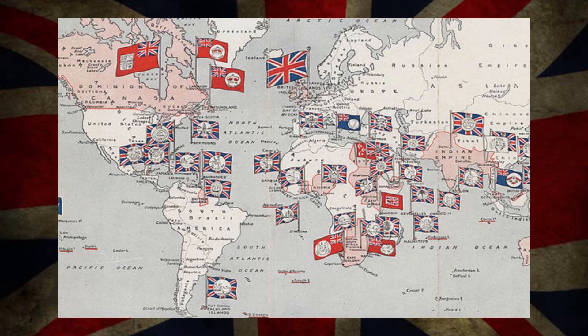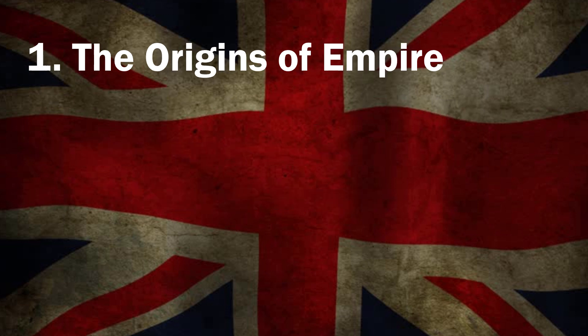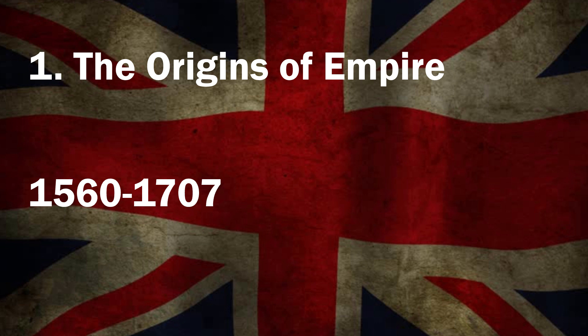In this video, let us focus on the historical chronology of the British Empire. We can break the British Empire down into four stages. The first stage we will term the origins of empire, and this dates from around 1560 to 1707.